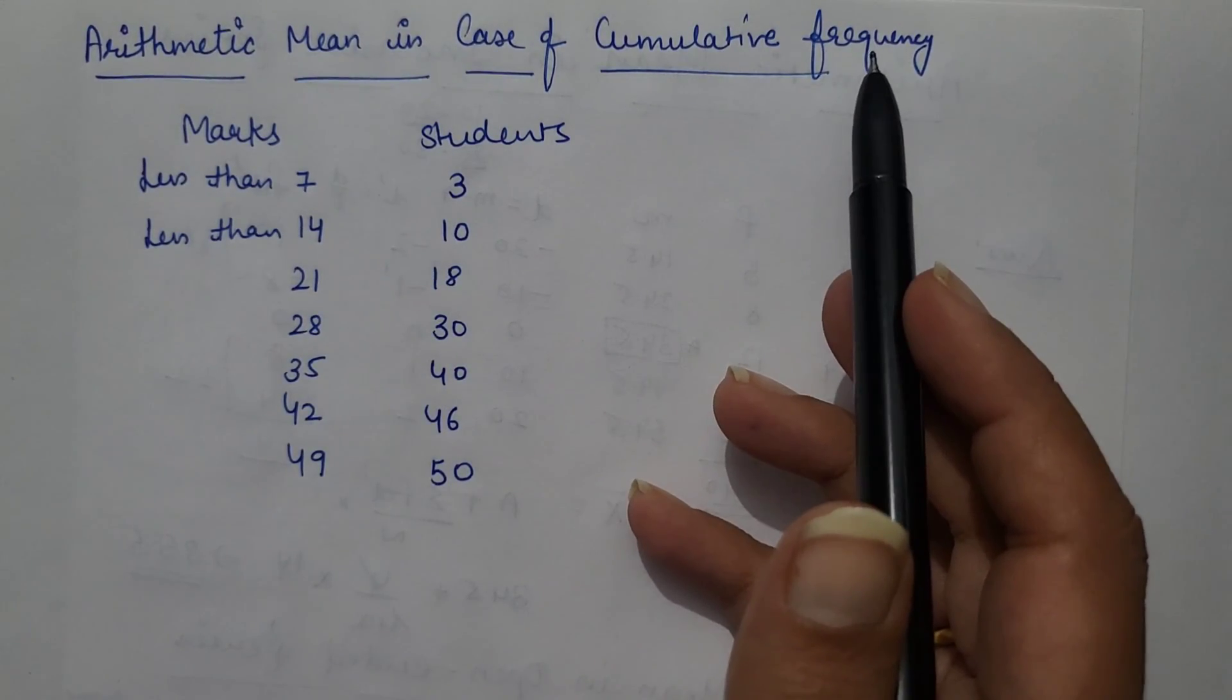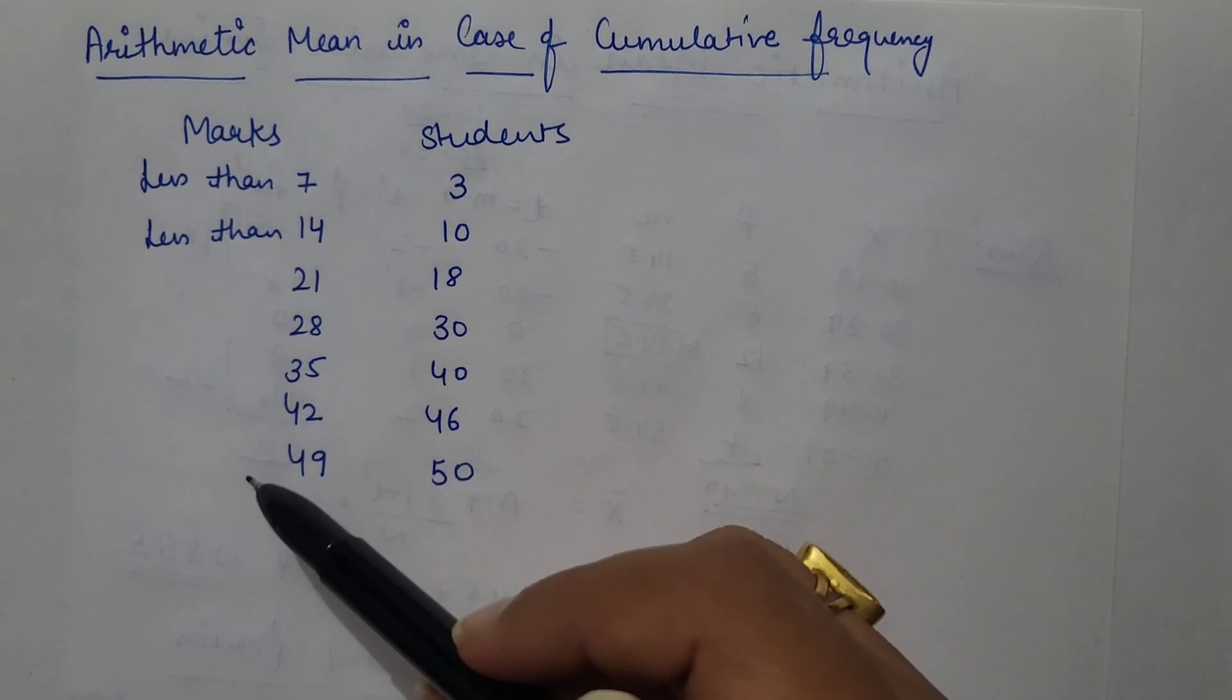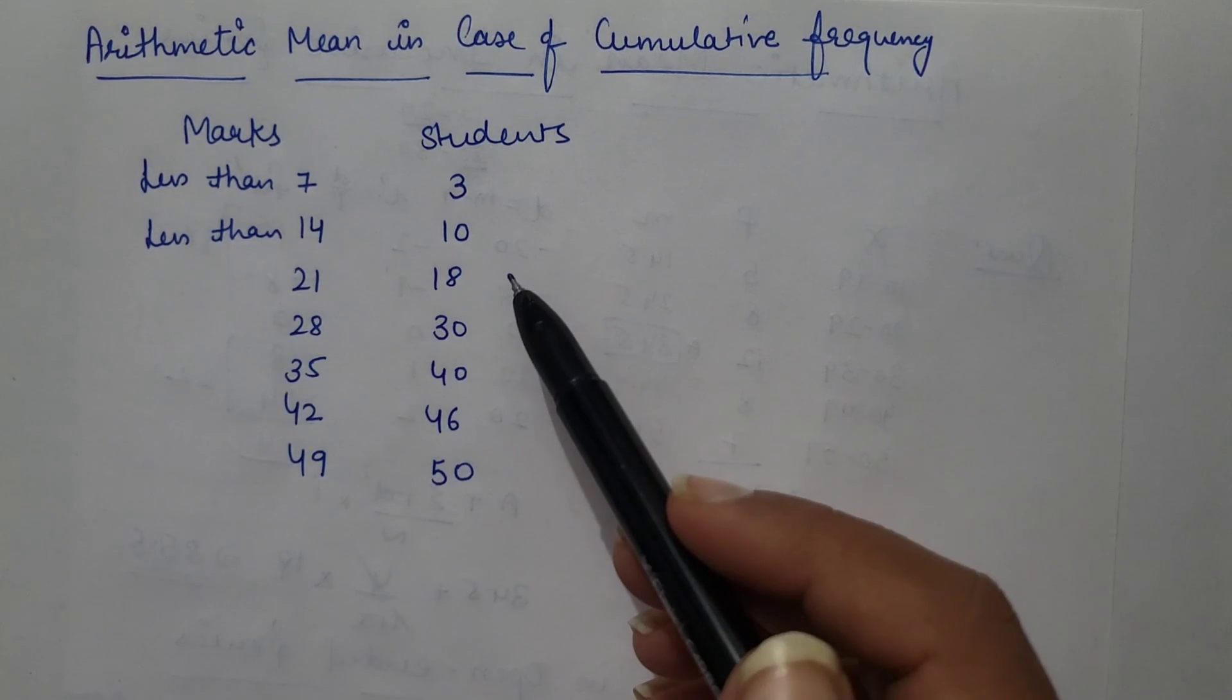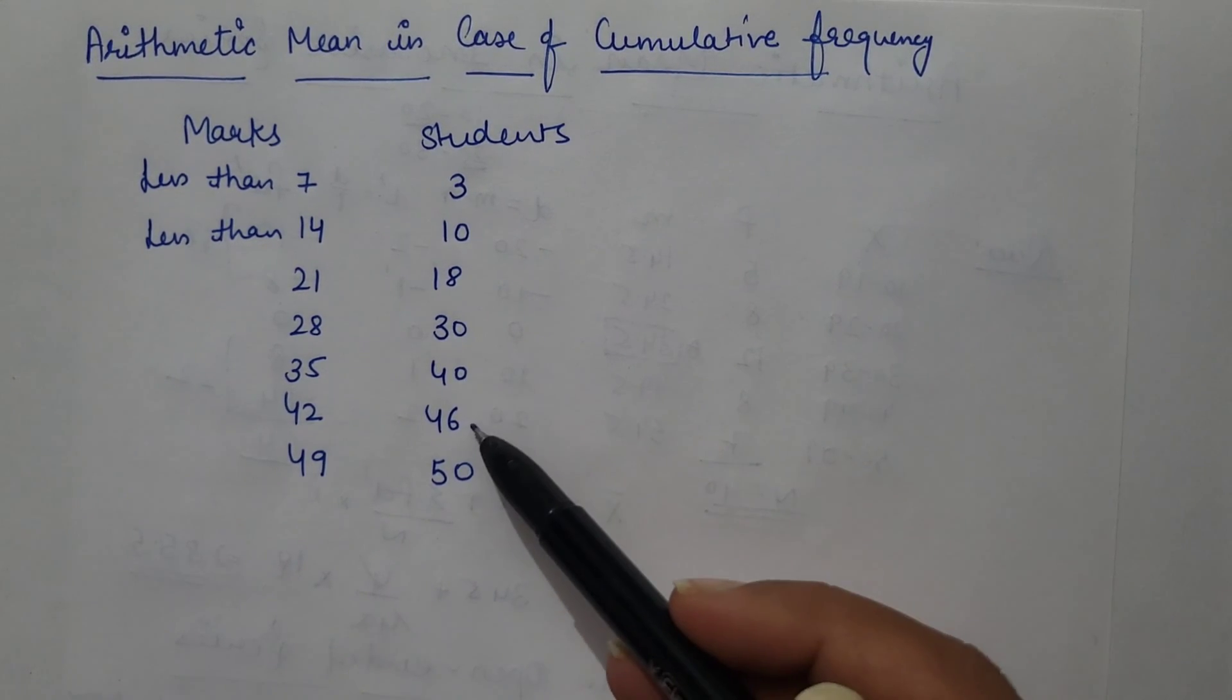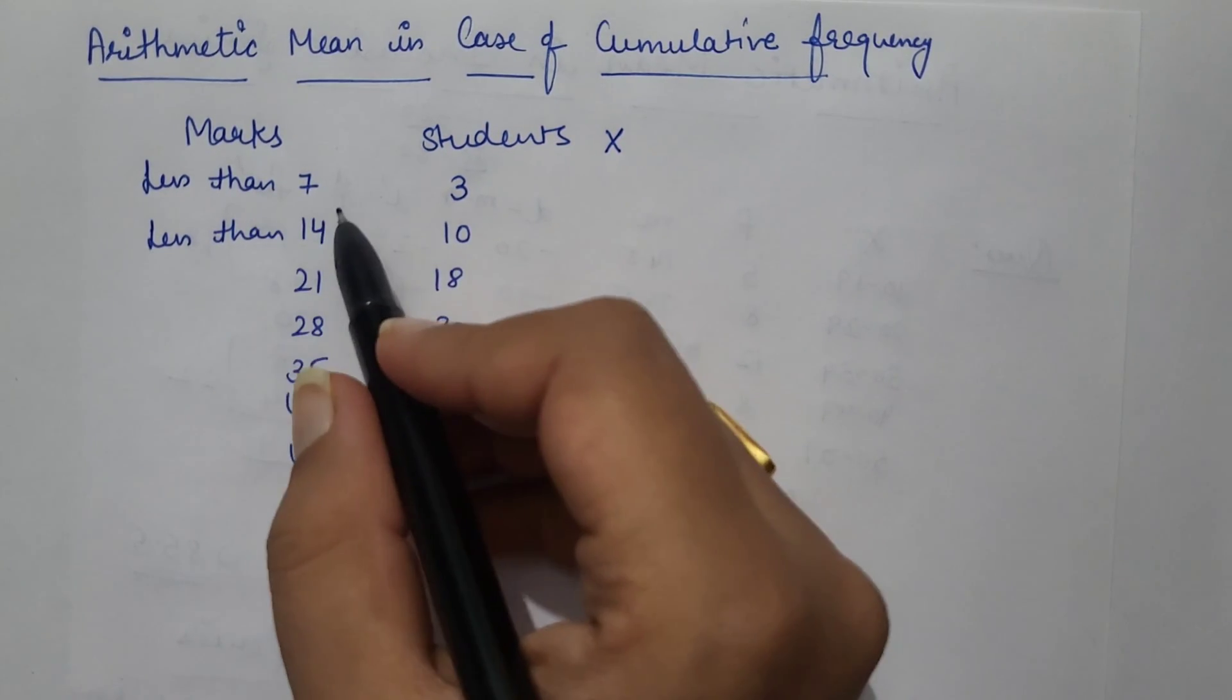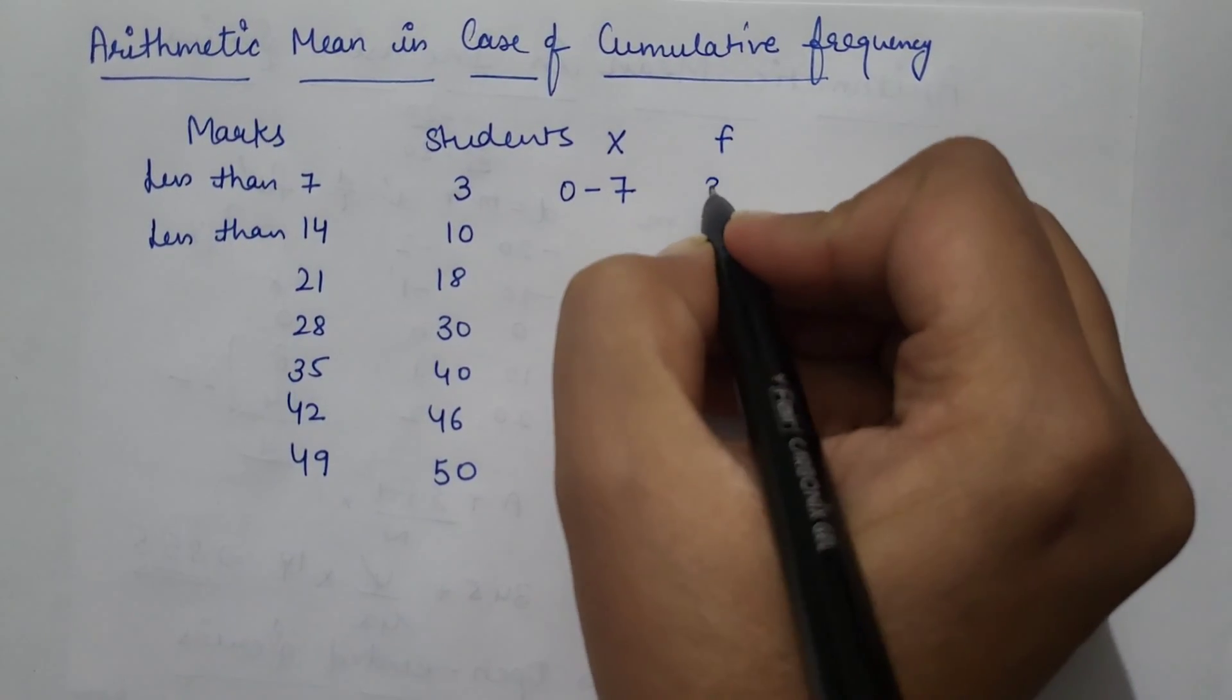Arithmetic mean in case of cumulative frequency. In these kind of series, marks is given less than or in more than standard. So here class intervals is given as less than 7, less than 14, less than 21. So we have to convert this data into class intervals first. And here you can see frequency is given in increasing order. Means it is cumulative frequency. So first of all class intervals like less than 7. 7 se kam jin students ke marks the, vo 3 students the.